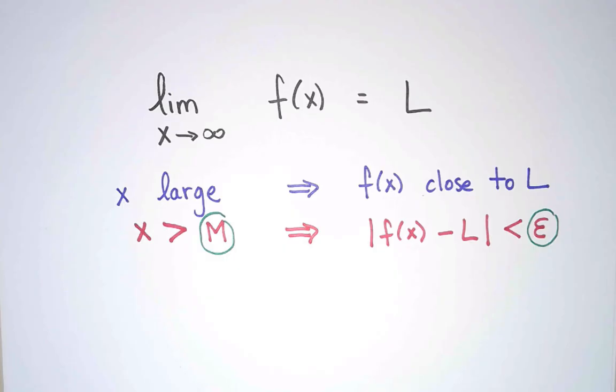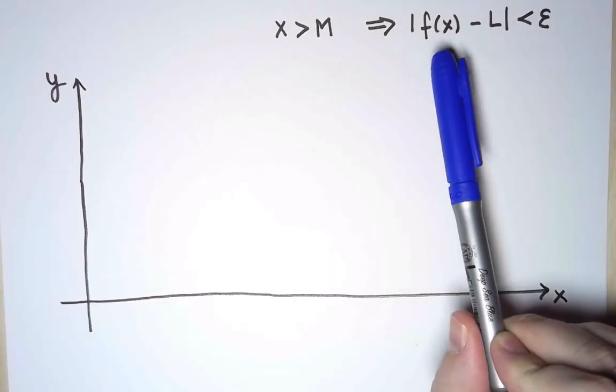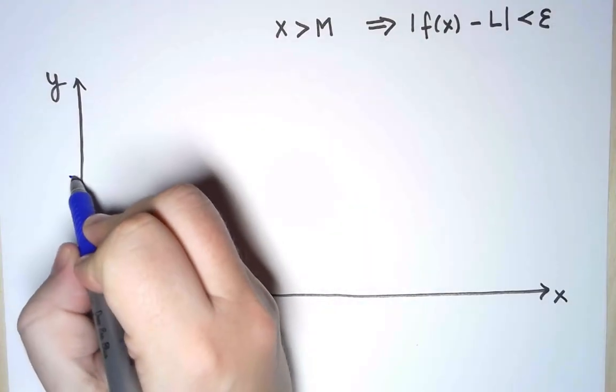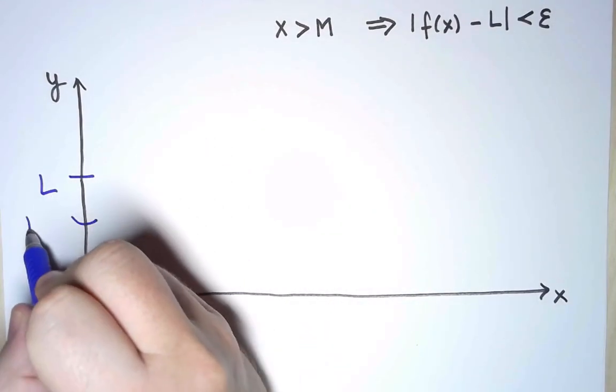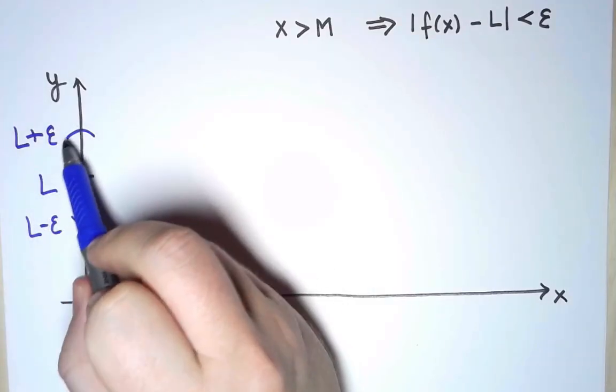First, let's have a look at what this means in the graph of the function. Saying that the distance between f and L is smaller than ε means that f must be between L-ε and L+ε. So f must be here.